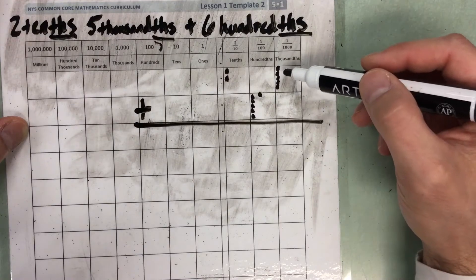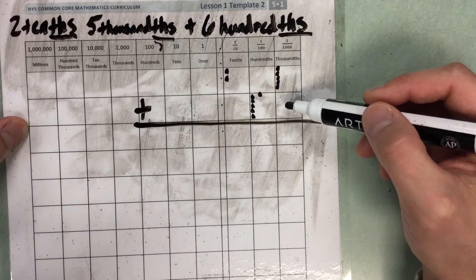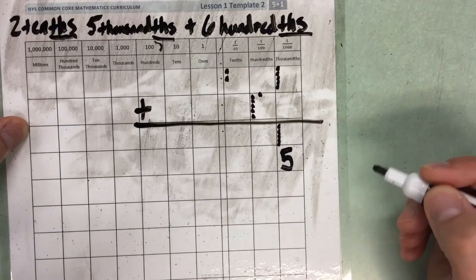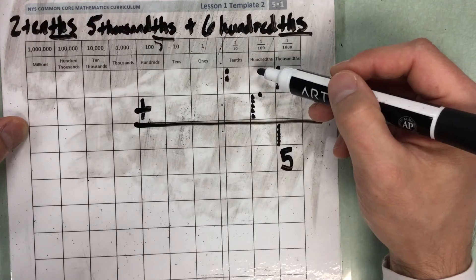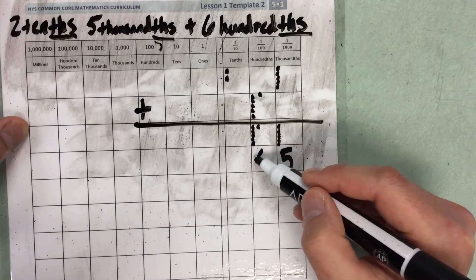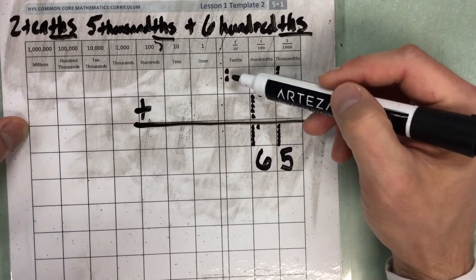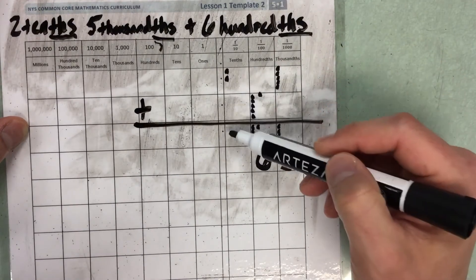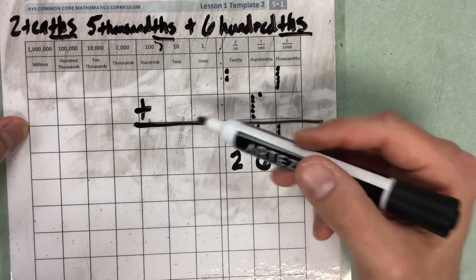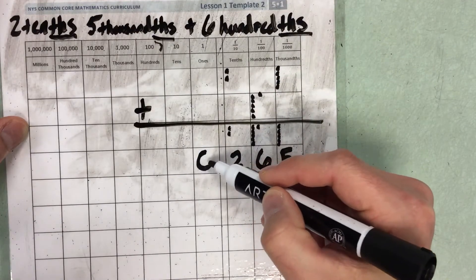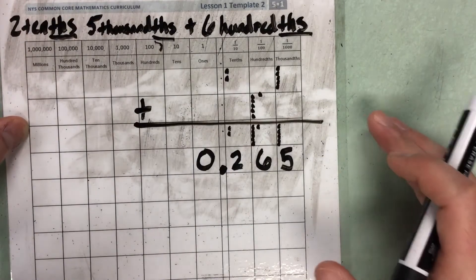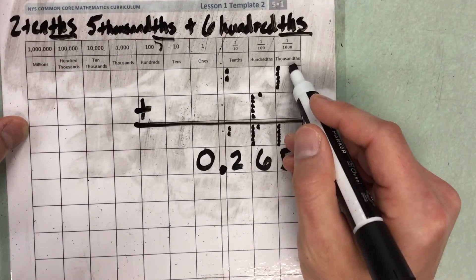Alright, so I'm going to add 5 thousandths plus 0 thousandths — that gives me 5 thousandths. I'm going to add 0 hundredths plus 6 hundredths — that gives me 6 hundredths. Then I'm going to add 2 tenths plus 0 tenths, which gives me 2 tenths. I know that I need a 0 as my placeholder in my ones column, so I can add my decimal. The answer is 0 and 265 thousandths.